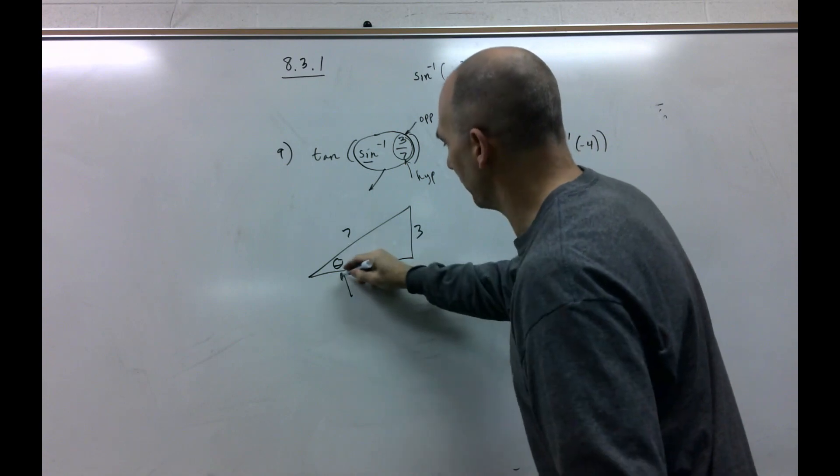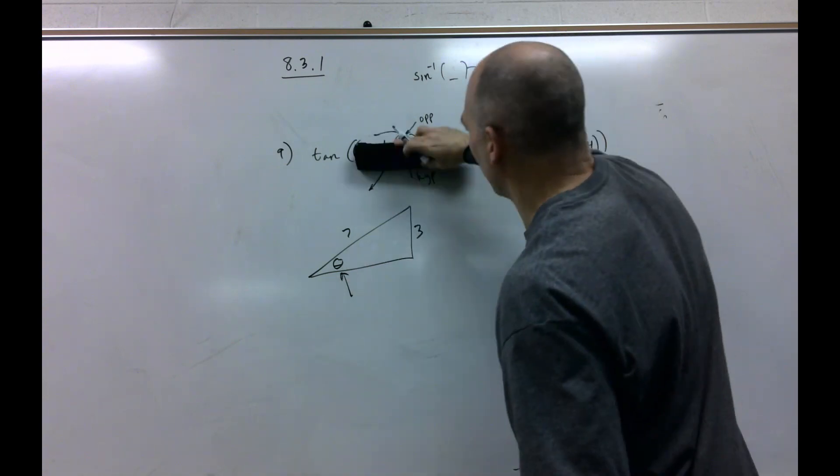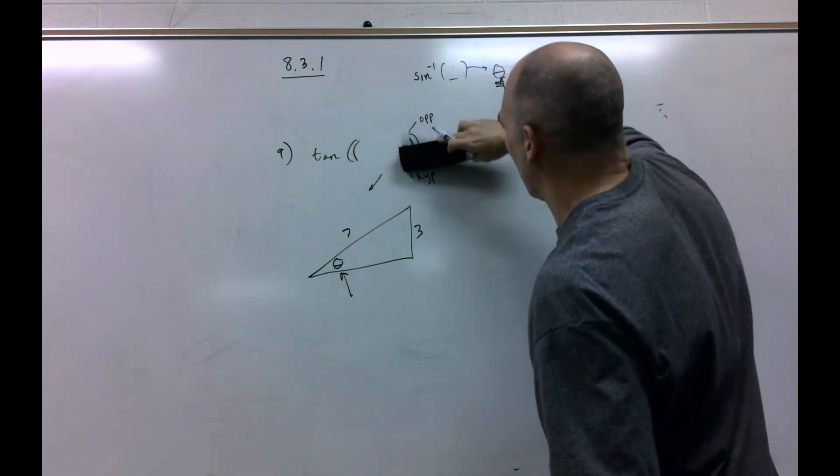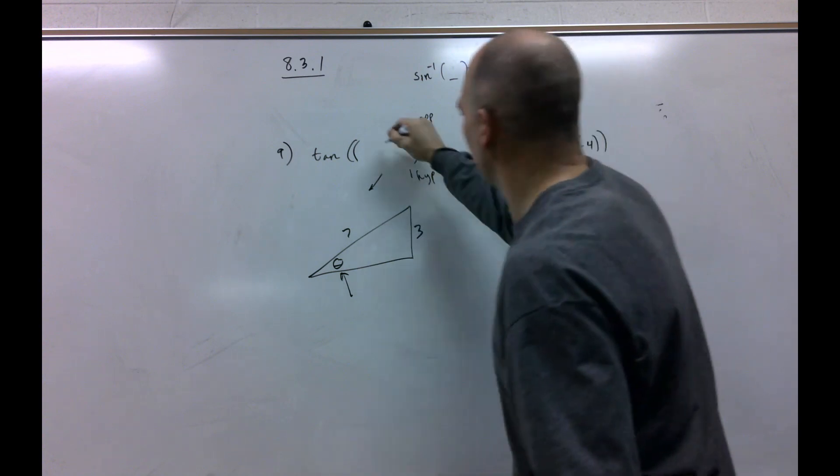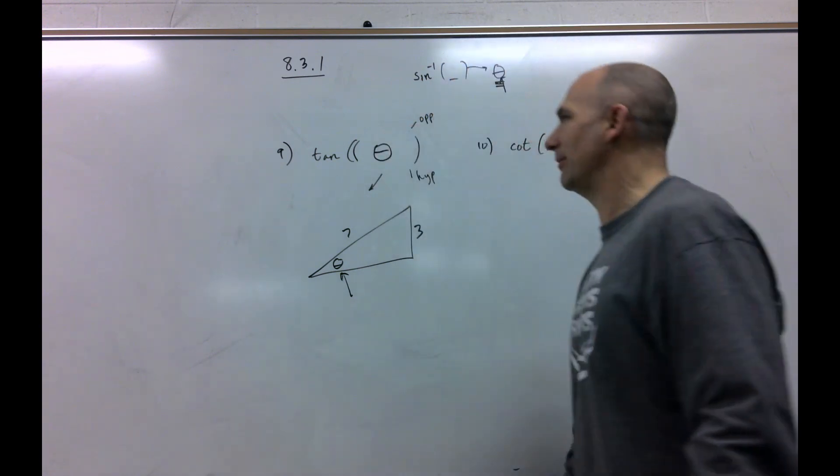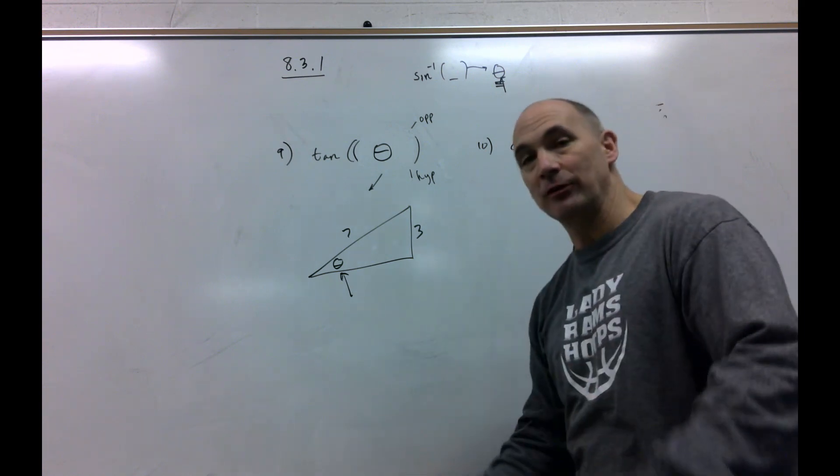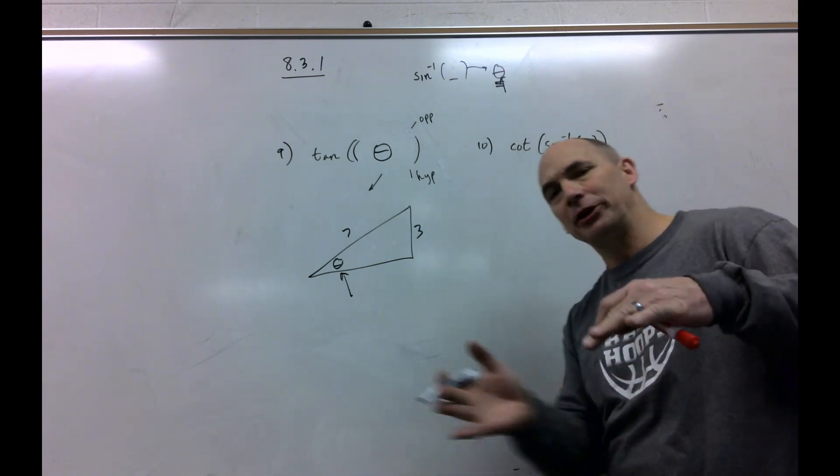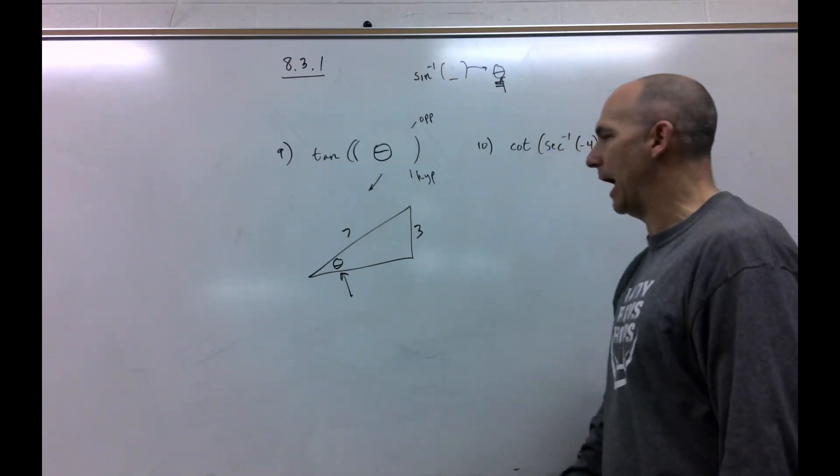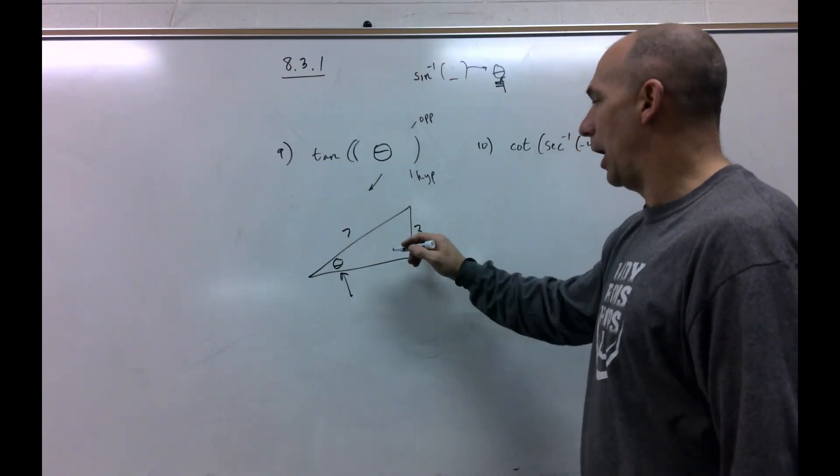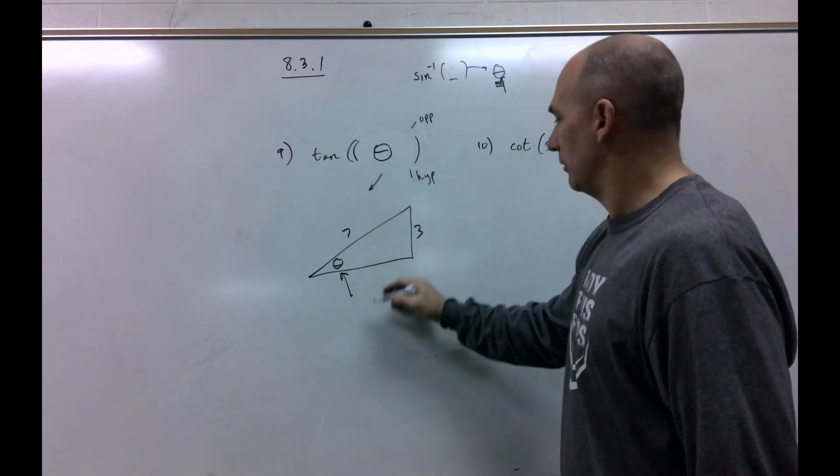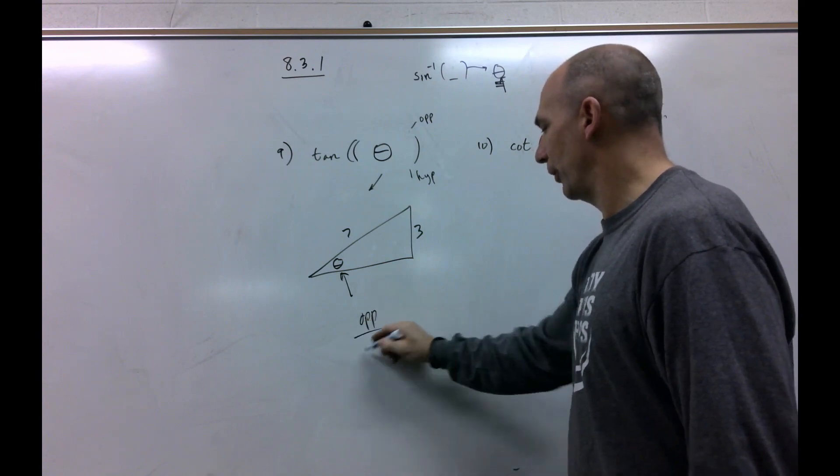So, once we've got the drawing drawn, the problem is simply asking us find tangent of theta. That's a really weird way to ask you to find tangent of theta, but it's just a little different wrinkle in this map. So, what is tangent?